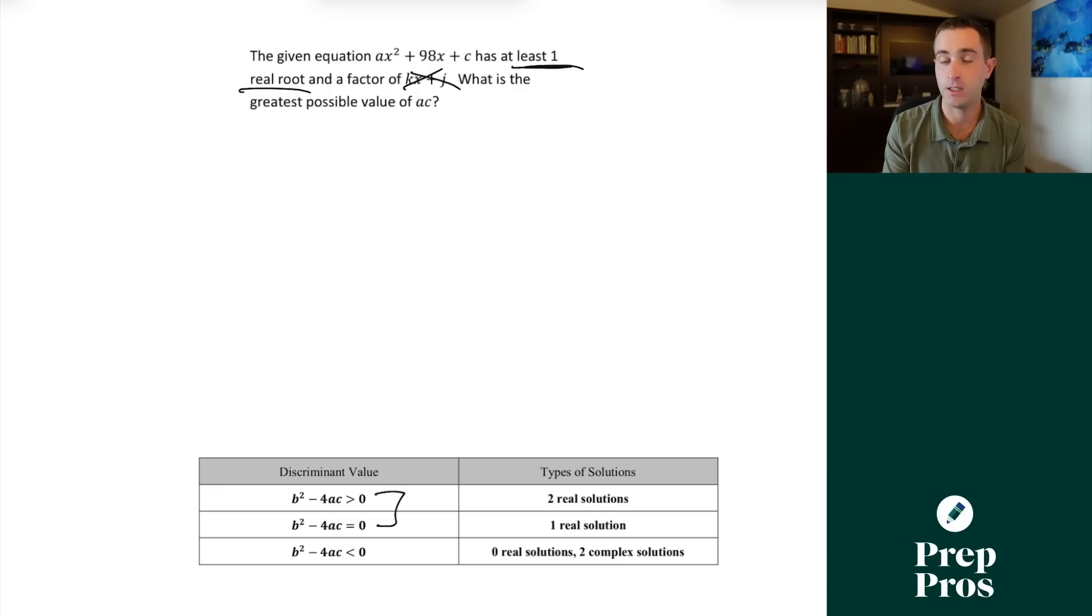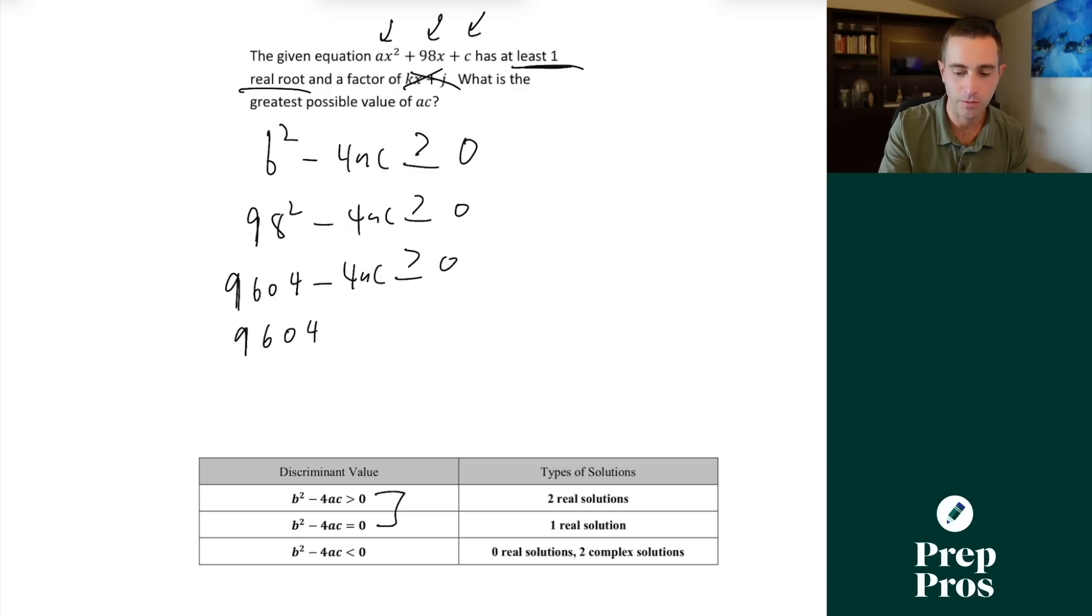Since we're saying at least one real root, that means you could have one or two roots or one or two solutions. That means we want to combine these two conditions together. So this would give us b squared minus 4ac would be greater than or equal to zero. Our a value is a, our b is 98, and our c is c. So we're simply going to set this up as 98 squared minus 4ac is greater than or equal to zero.